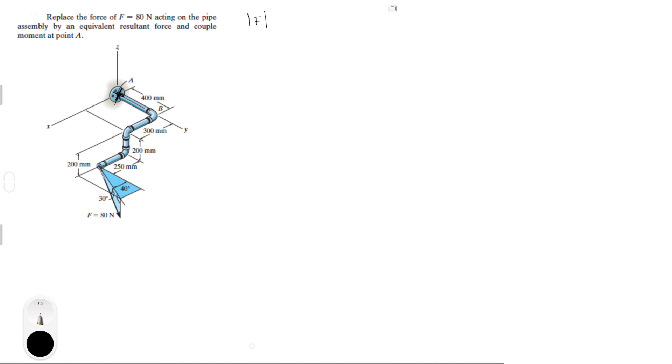We do have though that the magnitude of F is equal to 80. So what we need to do is find the Cartesian vector form of F. To find the Cartesian vector form we need to find F of X, F of Y, and F of Z.